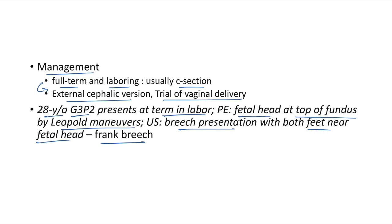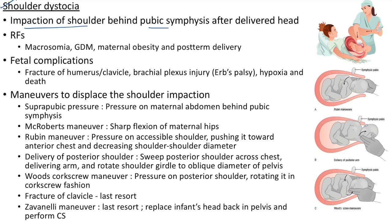Shoulder dystocia is impaction of the shoulder behind the pubic symphysis after delivery of the head. Risk factors: macrosomia, gestational diabetes, maternal obesity, and post-term delivery. Fetal complications: fracture of humerus or clavicle, brachial plexus injury (Erb's palsy), hypoxia, and fetal death.